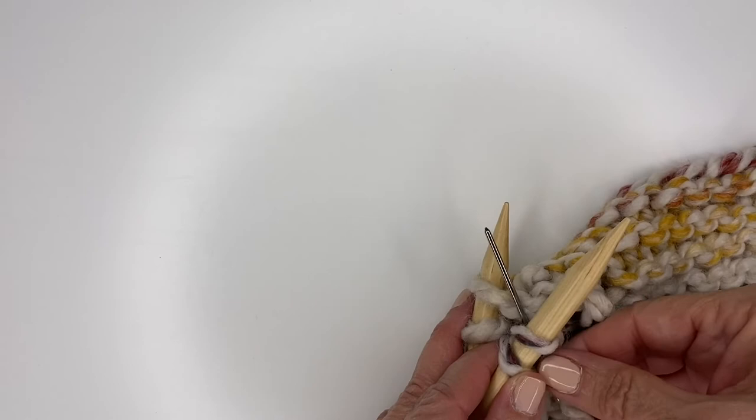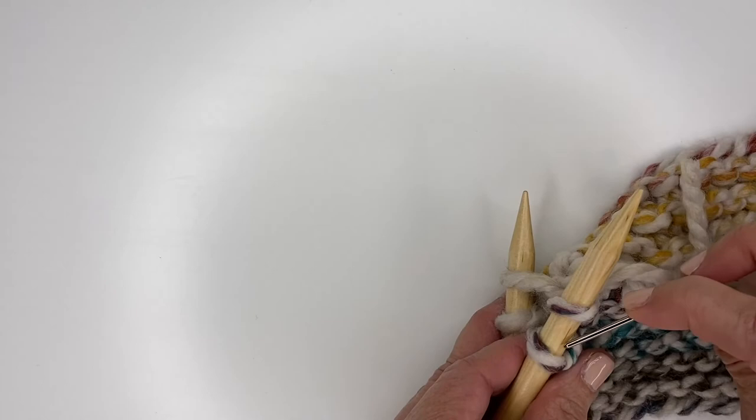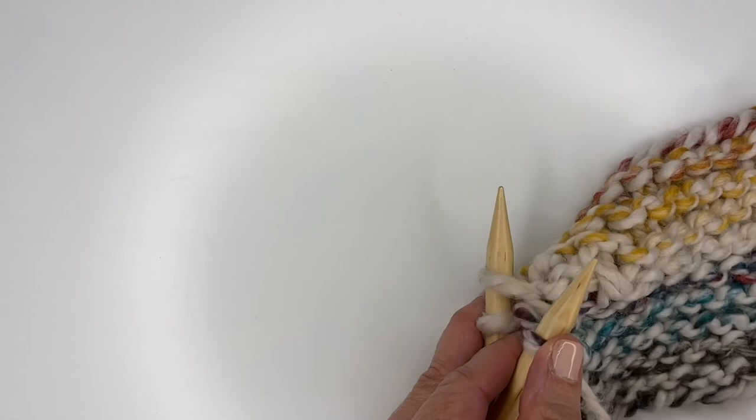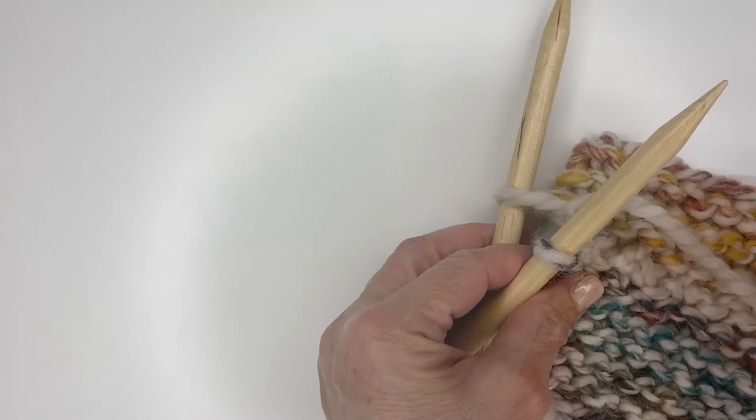Once you get to the last two stitches, what you're going to do is insert purlwise, slip this one off, insert purlwise, and slip the first one off. Now when you get to the last two stitches, all that's left to do is slip your darning needle in through knitwise and then knitwise on the back stitch, and that's it.